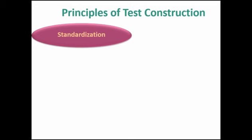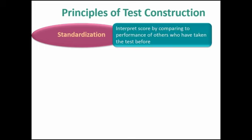This first principle, however, is pretty much reserved for the normed tests that are standardized IQ tests and other kinds of employment tests and things like that. Because for standardization to occur, we have to get a group of people to take the test who are not really test takers, but they're there to help us serve as a standardization sample. And that allows us to interpret an individual's score by comparing it to the performance of others who have taken the test before. So in standardization, we have to recruit a group of people who are fundamentally like the people who are really going to take the test.